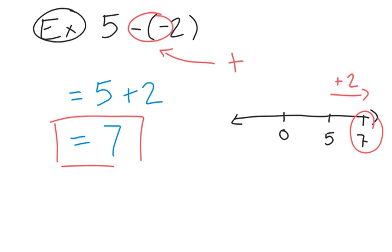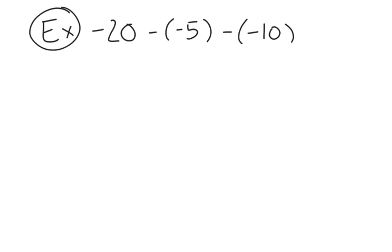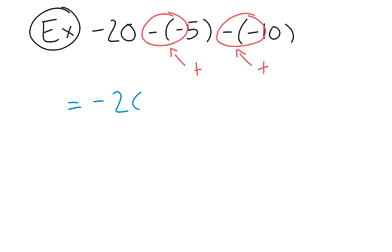You'll notice that we do not write in the plus sign, as that would be considered redundant. In our final example, we have negative 20 subtract negative five subtract negative 10. Again, the first thing you want to do is identify places where signs are beside each other. We have two negative signs together here, and two negative signs together here — when you have two negative signs beside each other, that simplifies into a positive sign. So let's rewrite this question as negative 20 plus five plus 10.